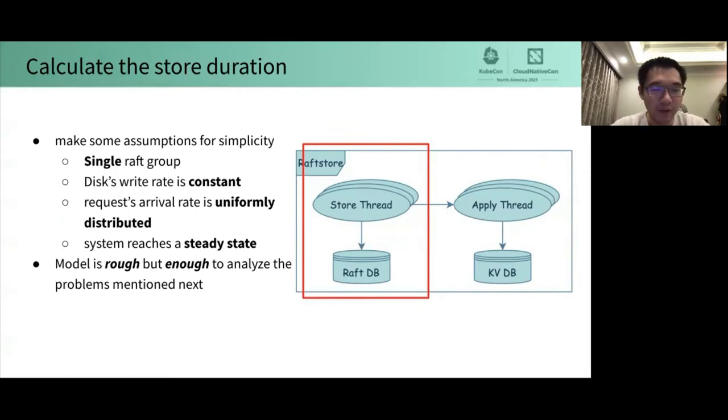In order to find a problem, let's calculate the store duration, which is the time between proposed and commit of a proposal. Let's make some assumptions for simplicity. First, we only consider a single Raft group. Secondly, disk write rate is constant. Thirdly, the request arrival time is uniformly distributed. Finally, the system reaches a steady state.